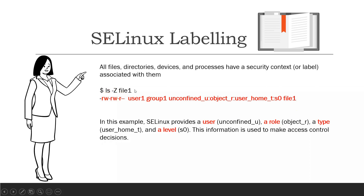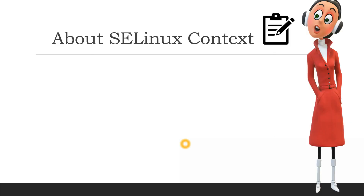For example, if I run the command 'ls -z' on a file named file1, we get to know the user, group, role, type, and level of the file. This is the standard format in which SELinux labeling is done. The user is 'unconfined_u', followed by the role assigned to that user, then the type — 'user_home_t' — which is the type of the file, and finally the security level. This information is used to make access control decisions.